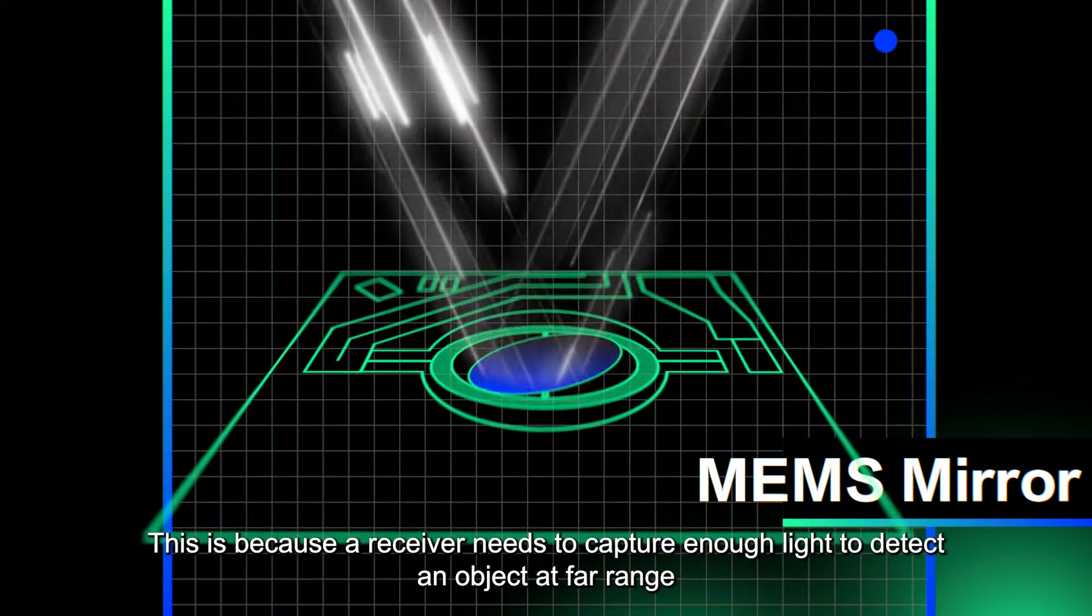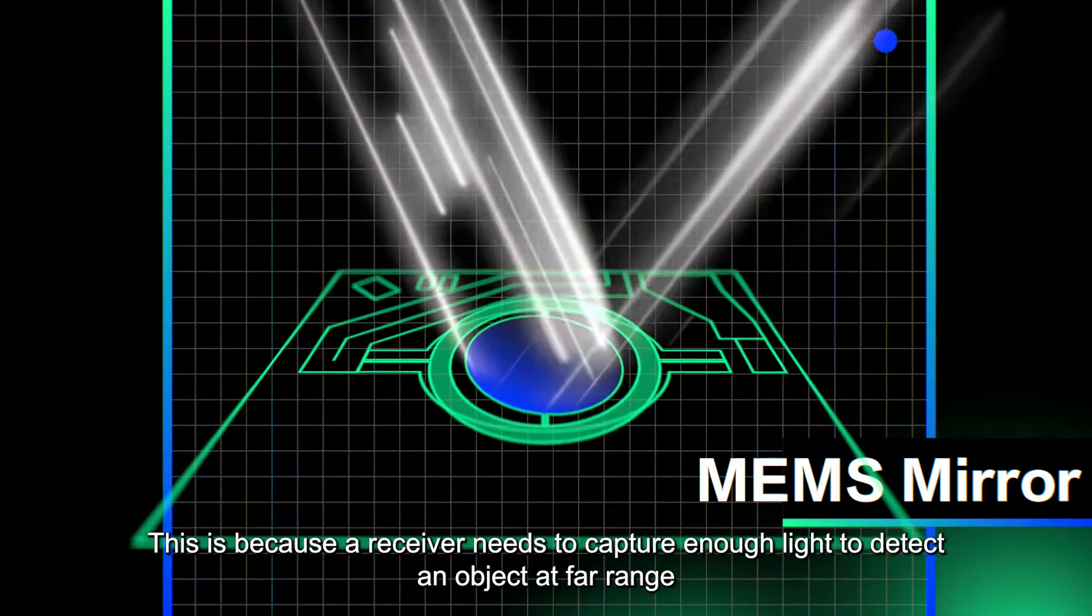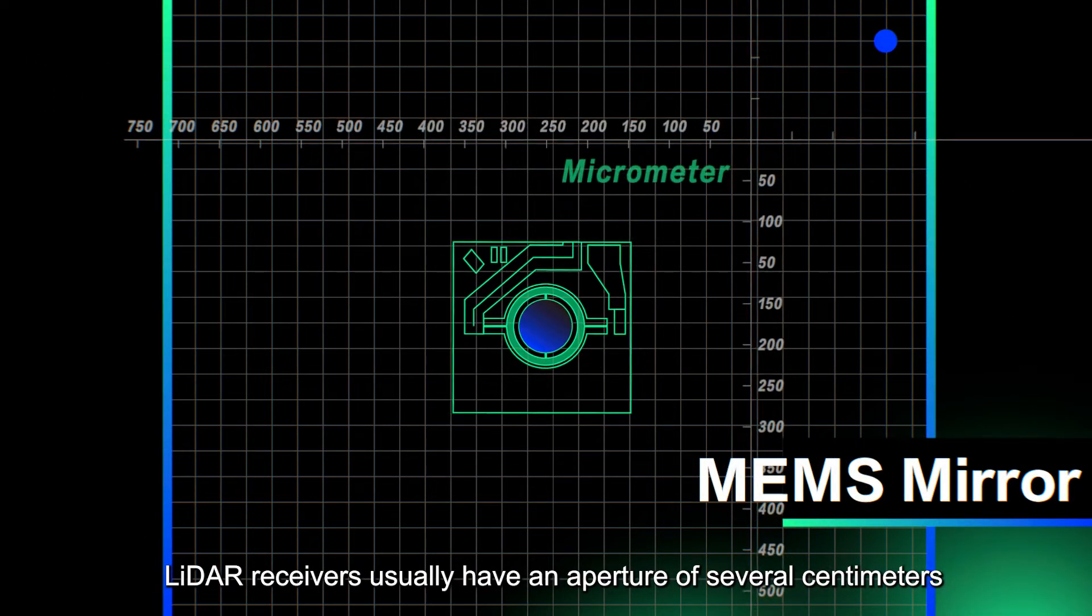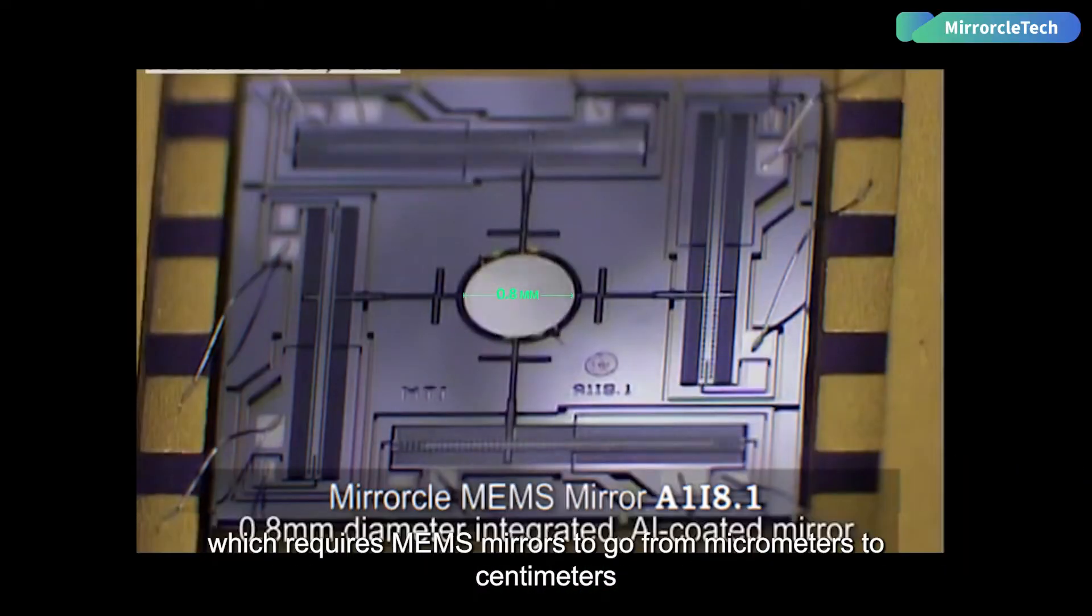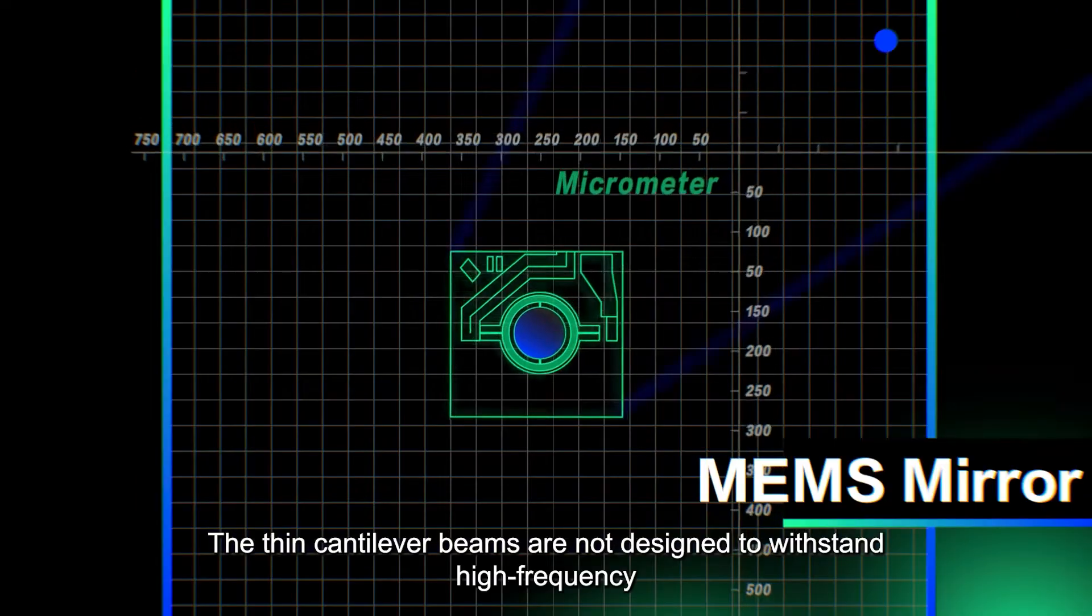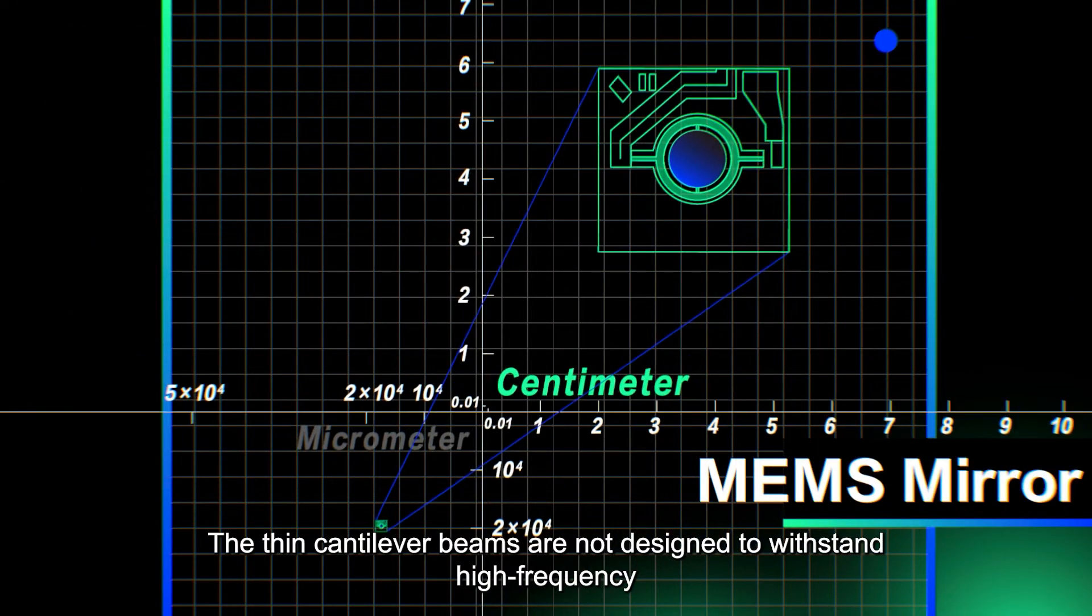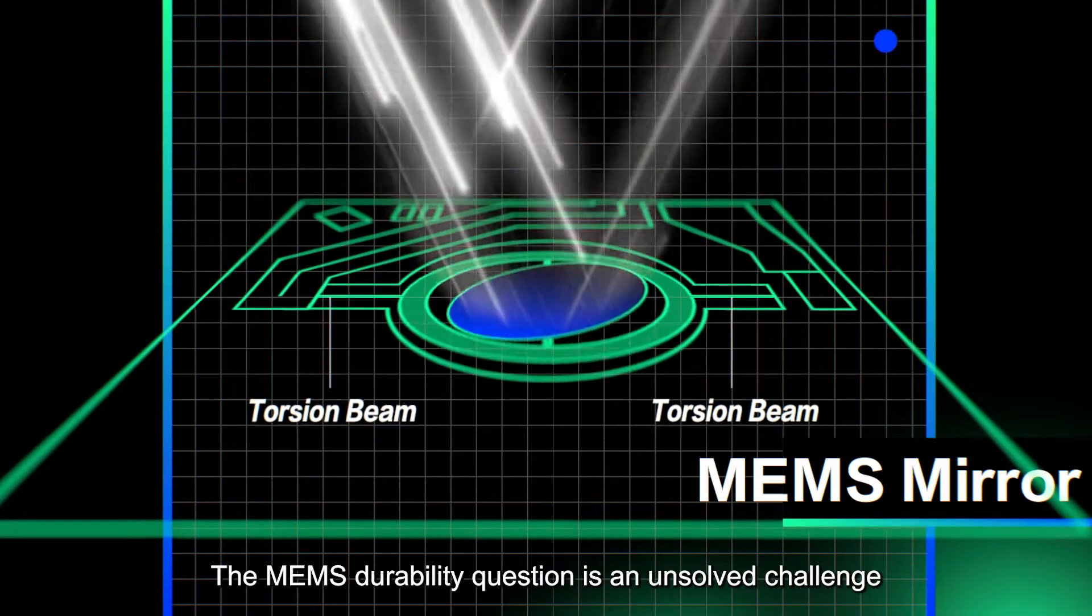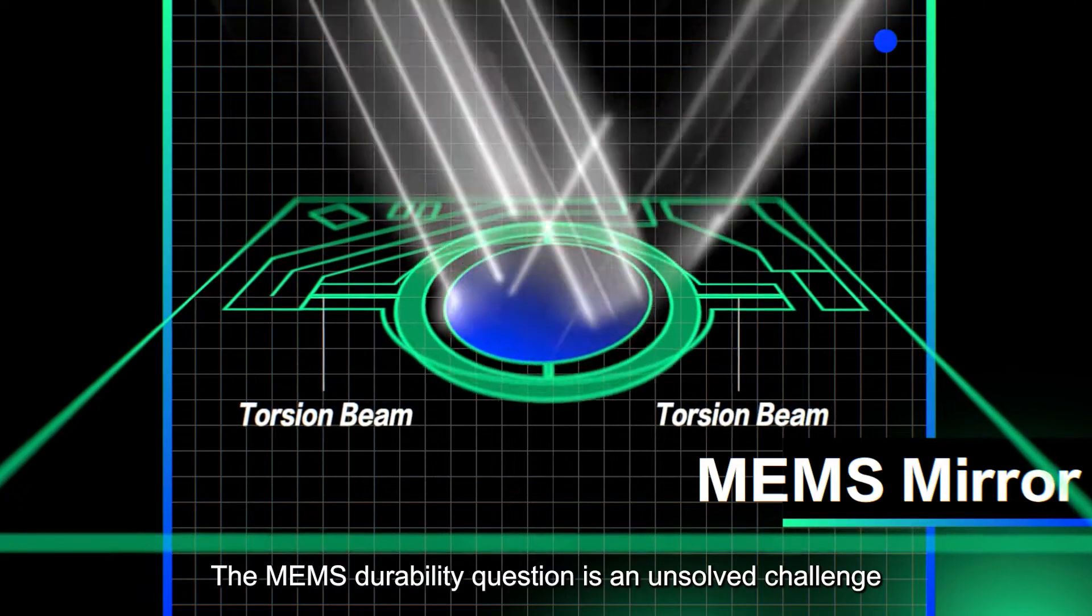This is because a receiver needs to capture enough light to detect an object at far range. LiDAR receivers usually have an aperture of several centimeters, which requires MEMS mirrors to go from micrometers to centimeters. The thin cantilever beams are not designed to withstand high frequency, large vibrations from a centimeter-sized mirror. The MEMS durability question is an unsolved challenge.